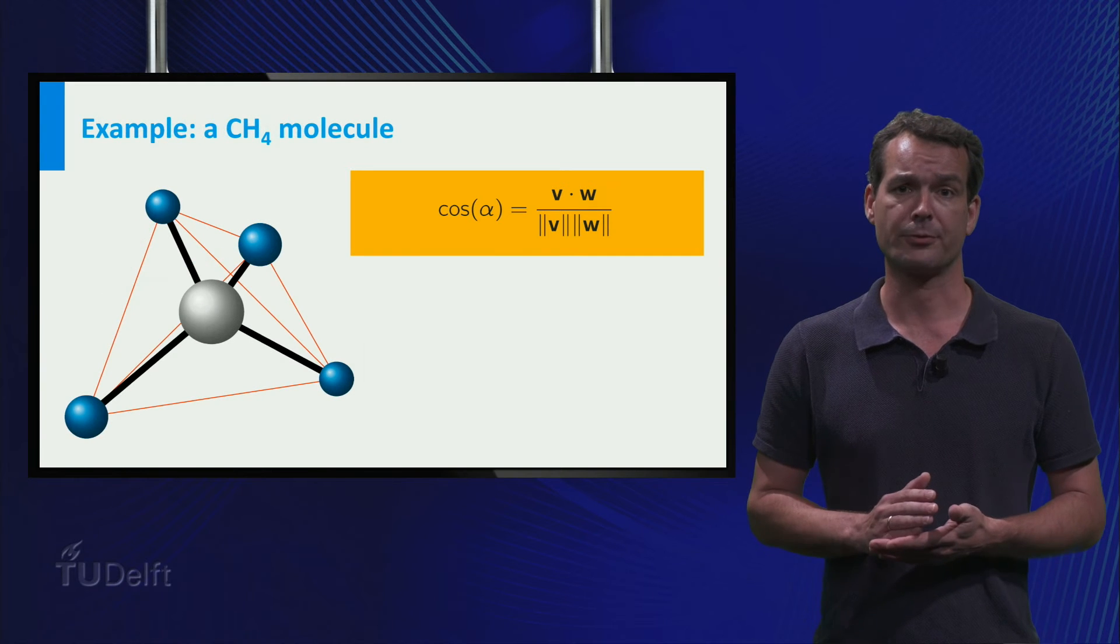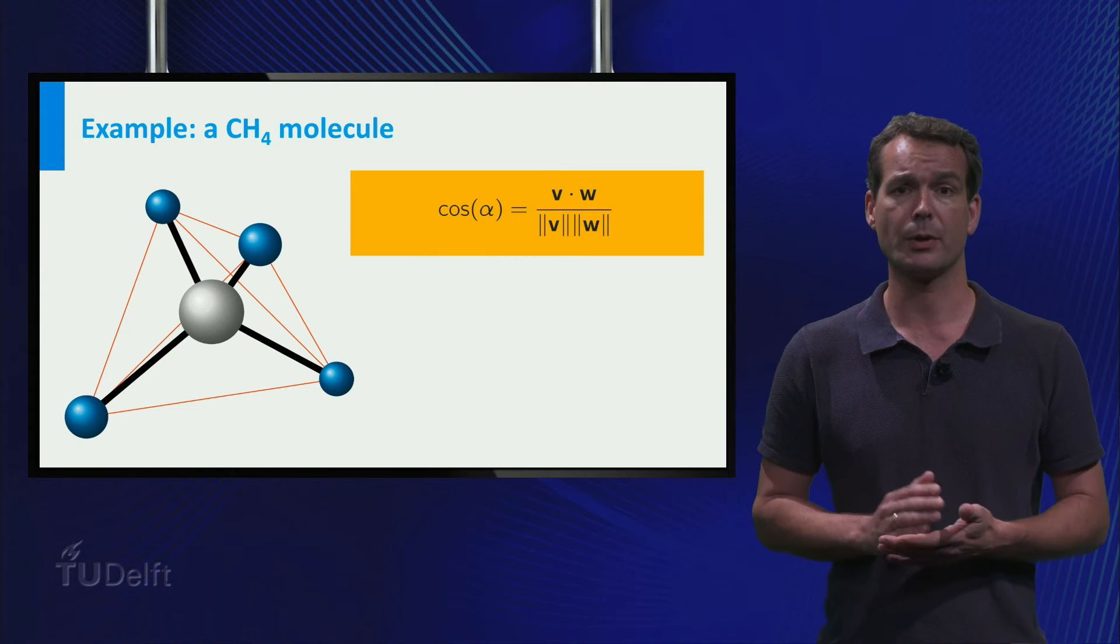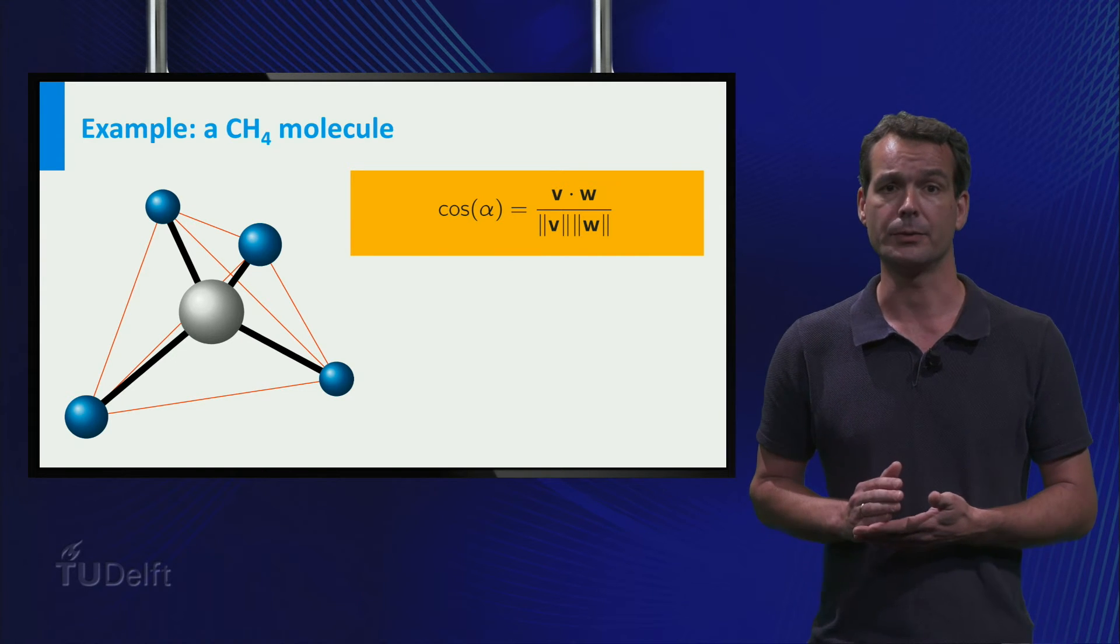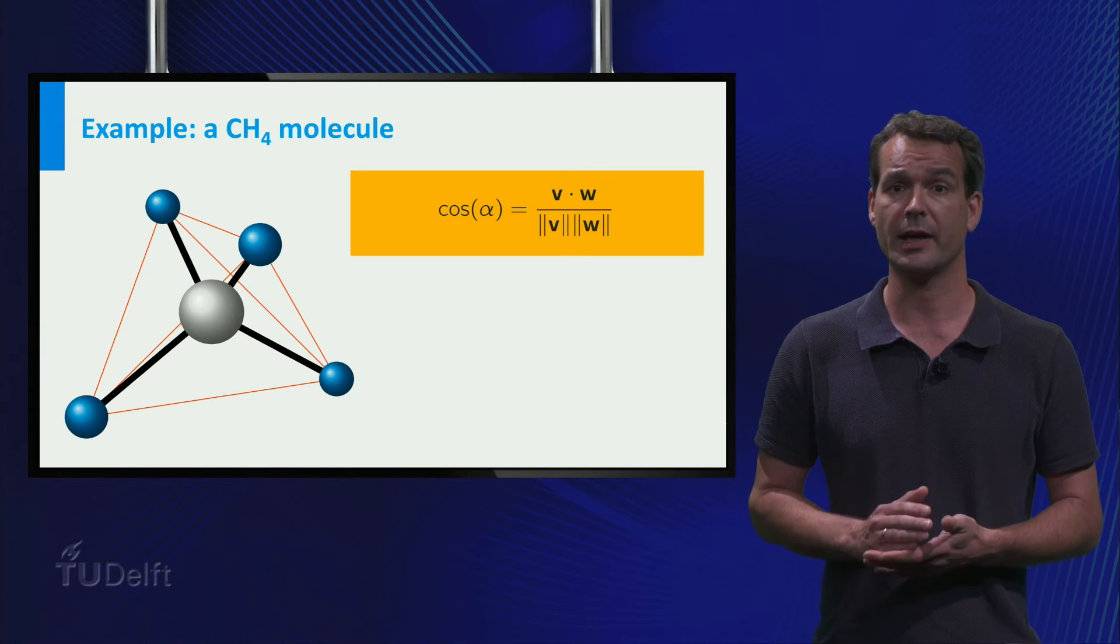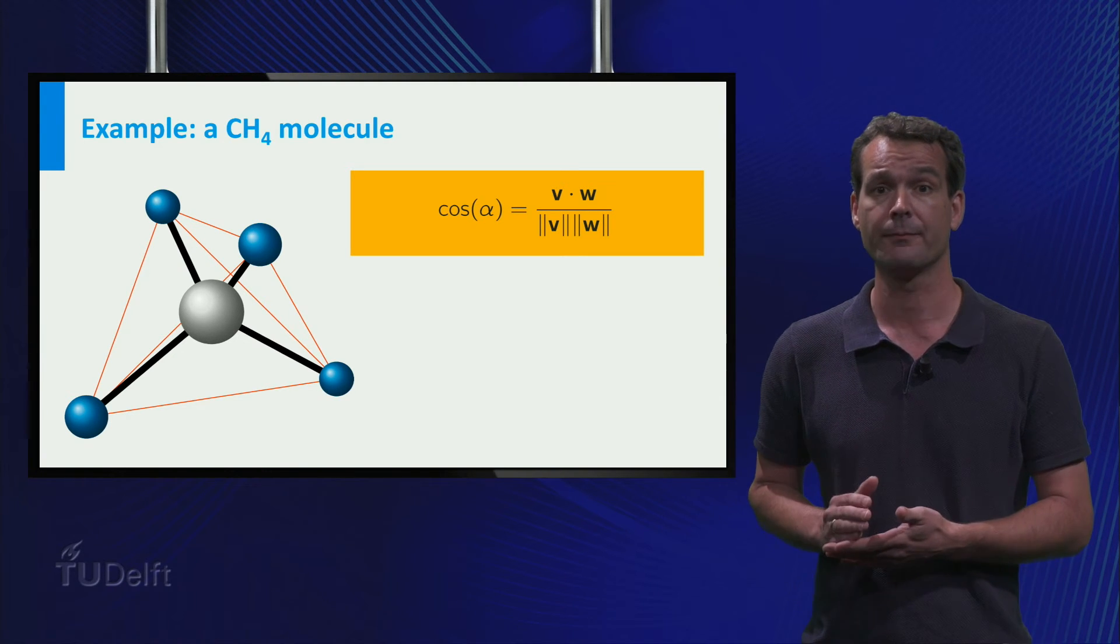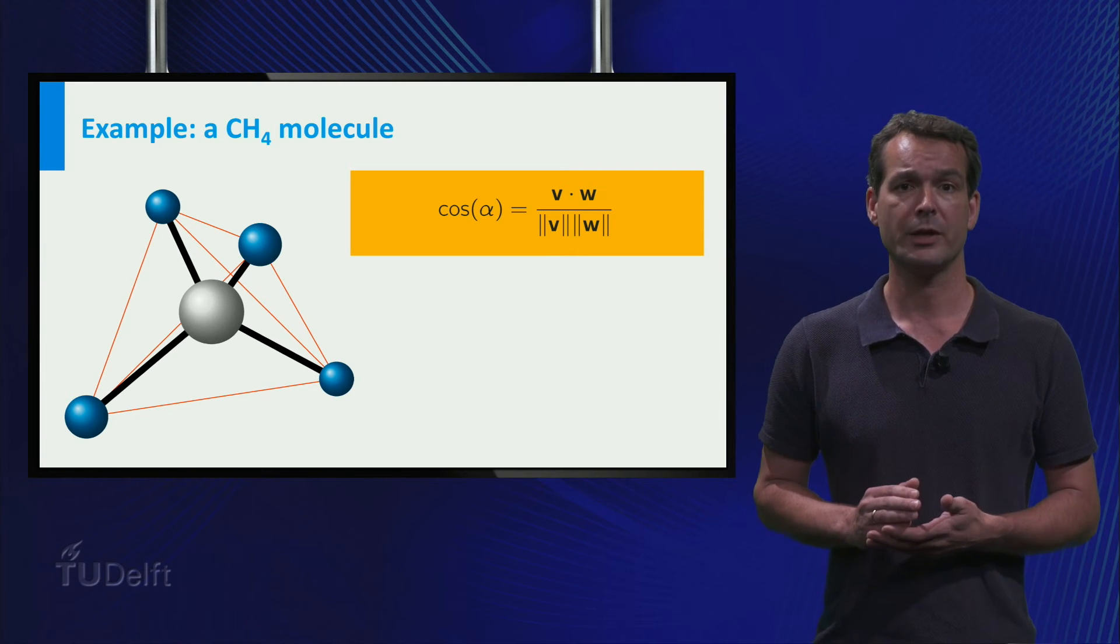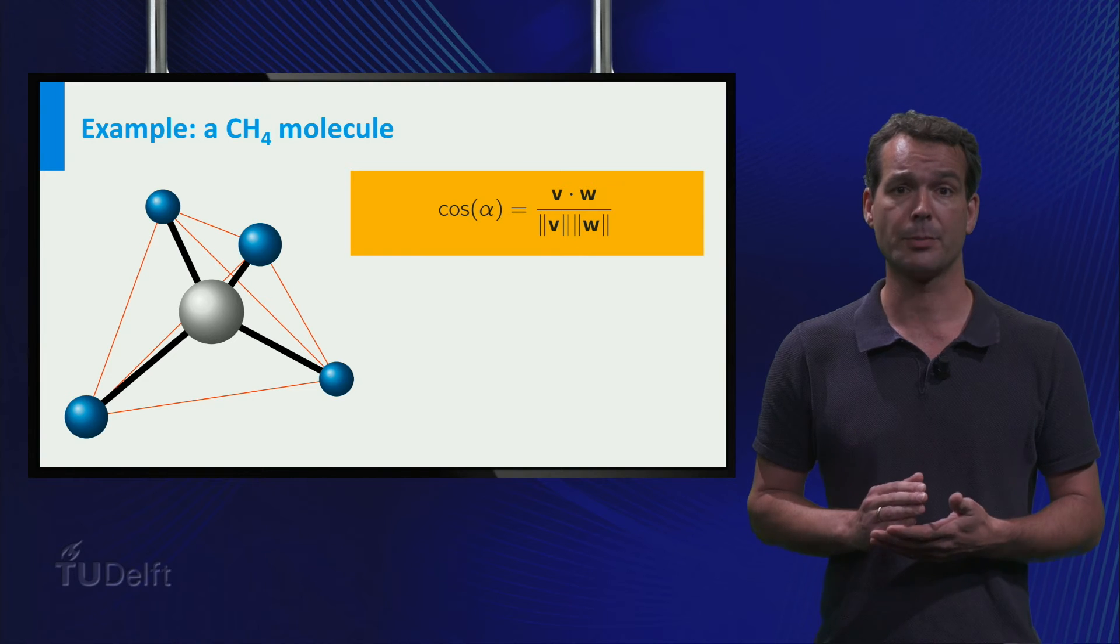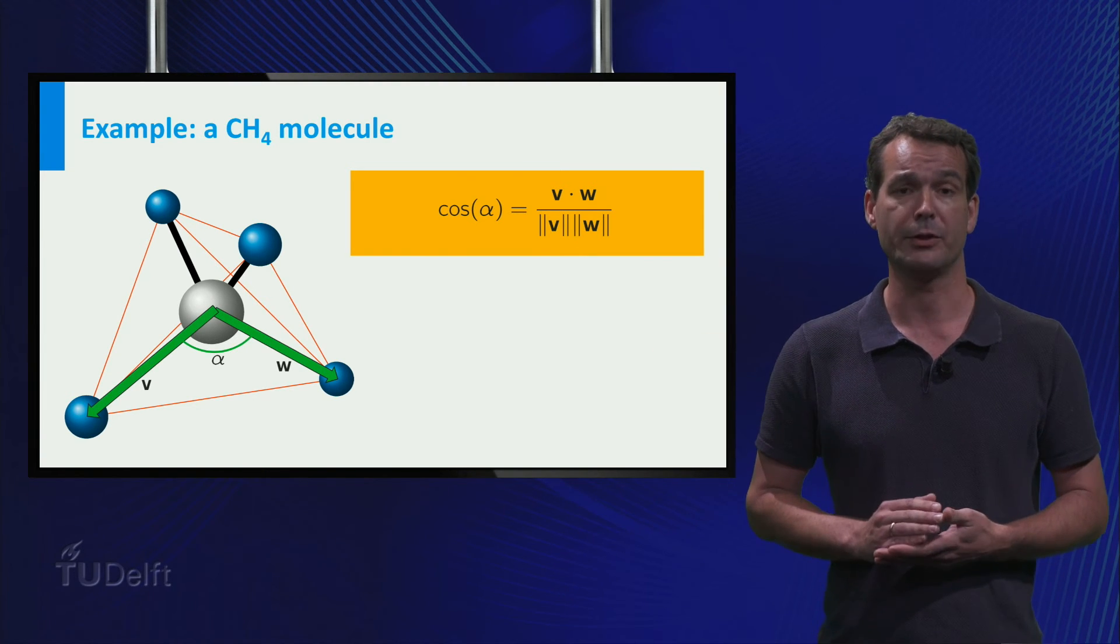Let's try to use this formula to find angles between vectors in three-dimensional space. As an example, consider a methane molecule. This consists of four hydrogen atoms located at the corners of a tetrahedron. And they are attached to one carbon atom in the center. We use the angle formula to calculate the bond angle, which is the angle alpha, between the vectors v and w in the picture.